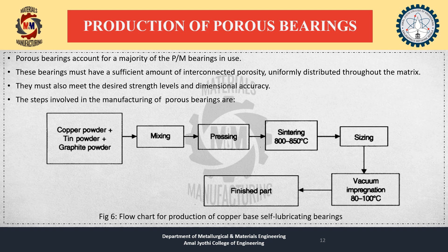Porous bearings account for a majority of powder metallurgy bearings in use. These bearings must have a sufficient amount of interconnected porosity uniformly distributed throughout the matrix, and must also meet the desired strength levels and dimensional accuracy. The steps involved in the manufacturing of porous bearings begin with powder selection — mainly copper powder, tin powder, and graphite powder are used.